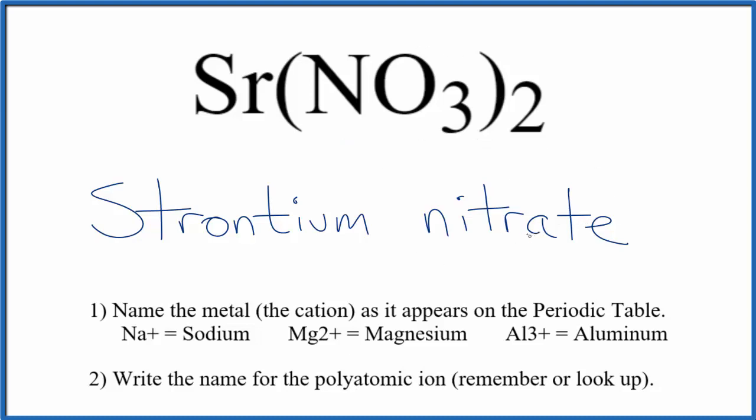The nitrate ion is always NO3 minus, with a 1 minus ionic charge. Strontium in group 2 on the periodic table is 2 plus. So you're going to need 2 of these nitrates, 2 nitrates for the strontium. So you end up with the formula Sr(NO3)2.